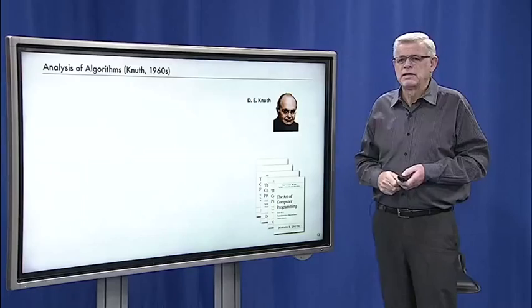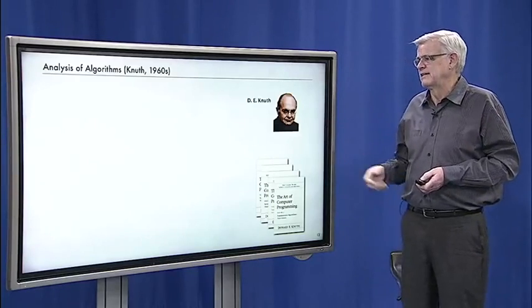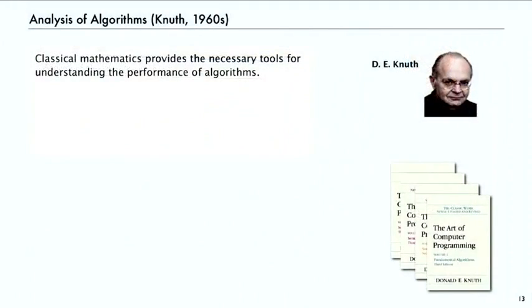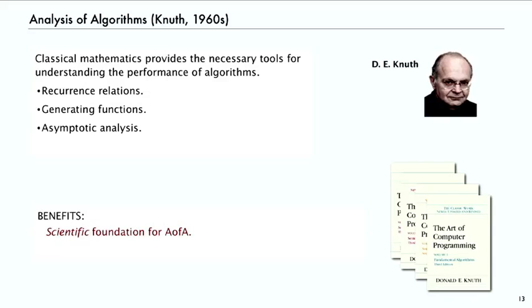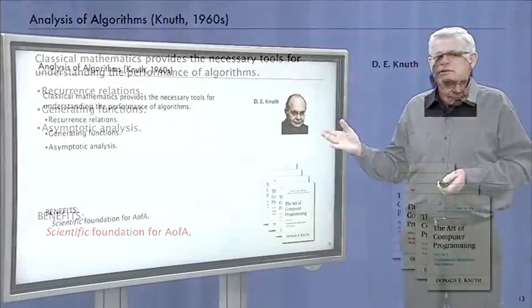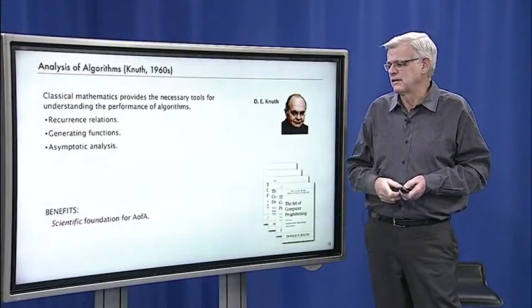But the field of analysis of algorithms was really initiated by Knuth in the 1960s. And what Knuth told the world, and there was some debate about it at the time, was that classical mathematics has really got the necessary tools that we need for understanding the performance of algorithms. There's things like recurrence relations and generating functions and asymptotic analysis that has the benefit of giving a scientific foundation for the analysis of algorithms. And Knuth wrote a series of four books so far, the first one came out in the late 60s, and two more came out in the early 70s, that really set out this scientific foundation that we really can use classic mathematics to understand the performance of algorithms.